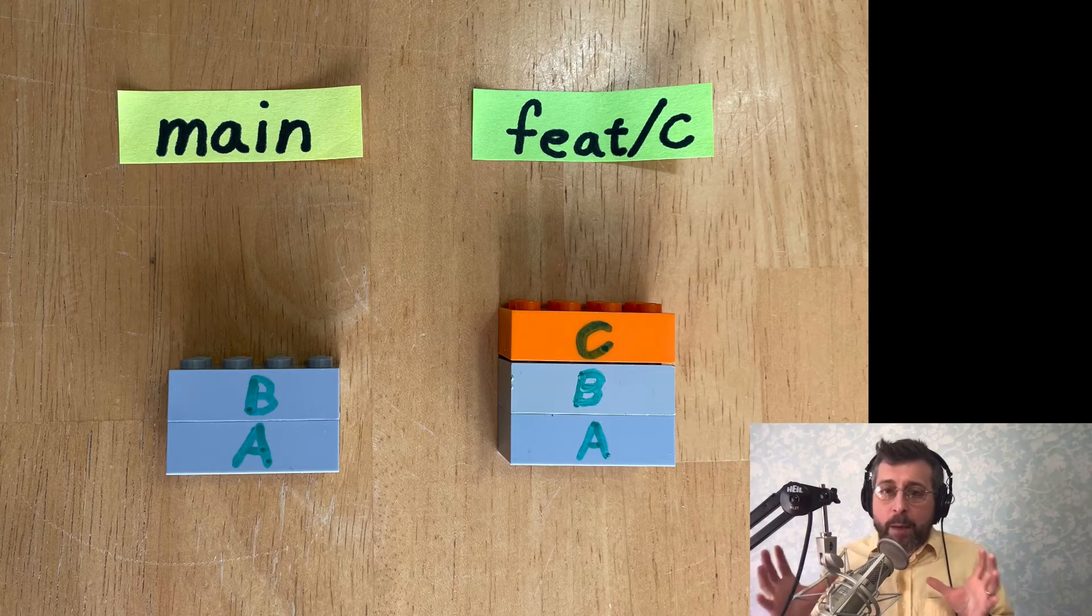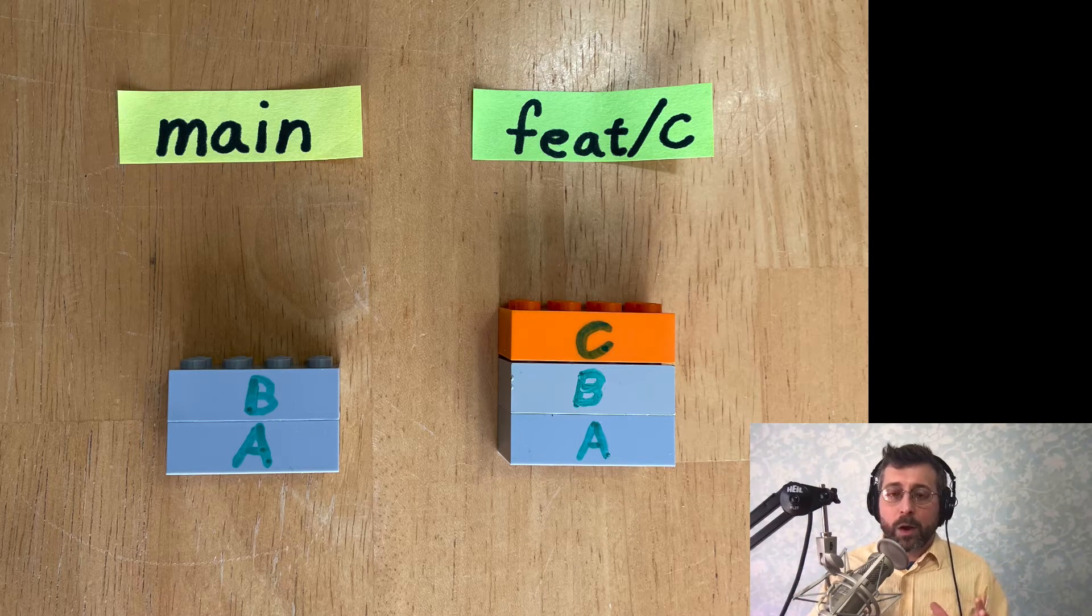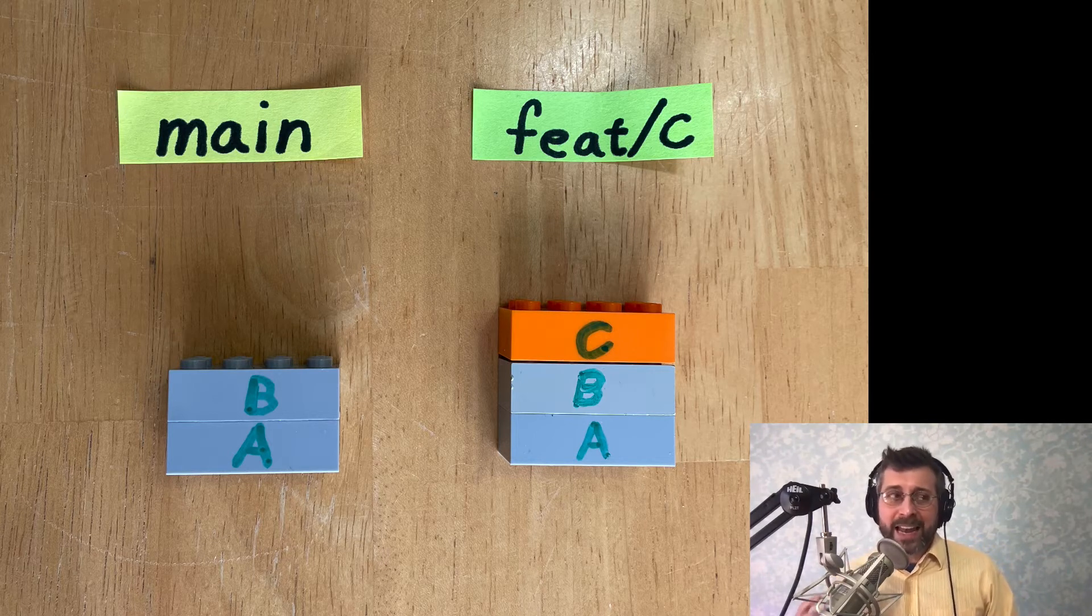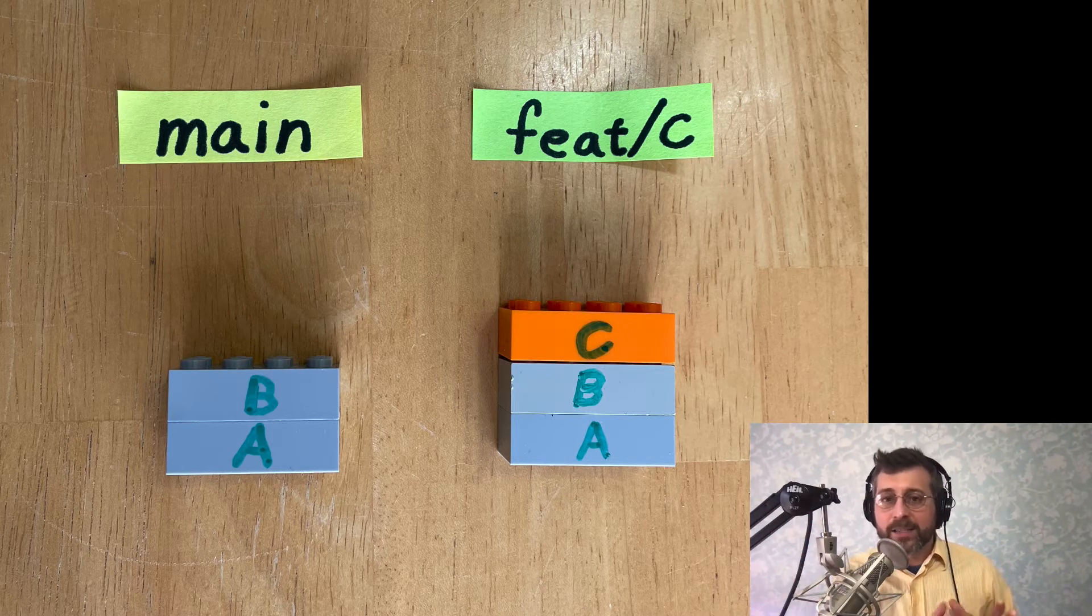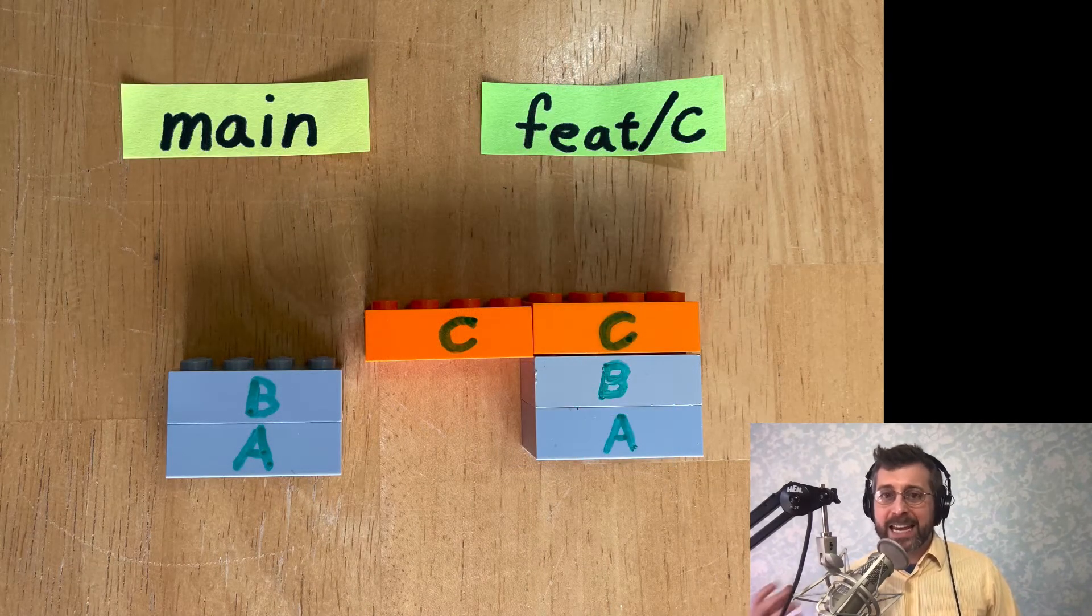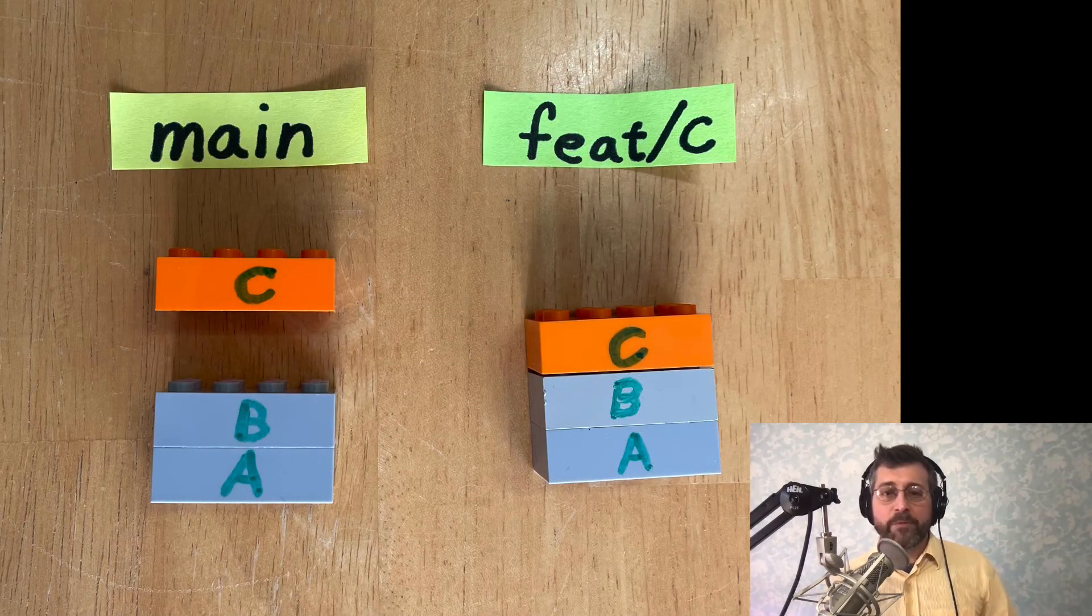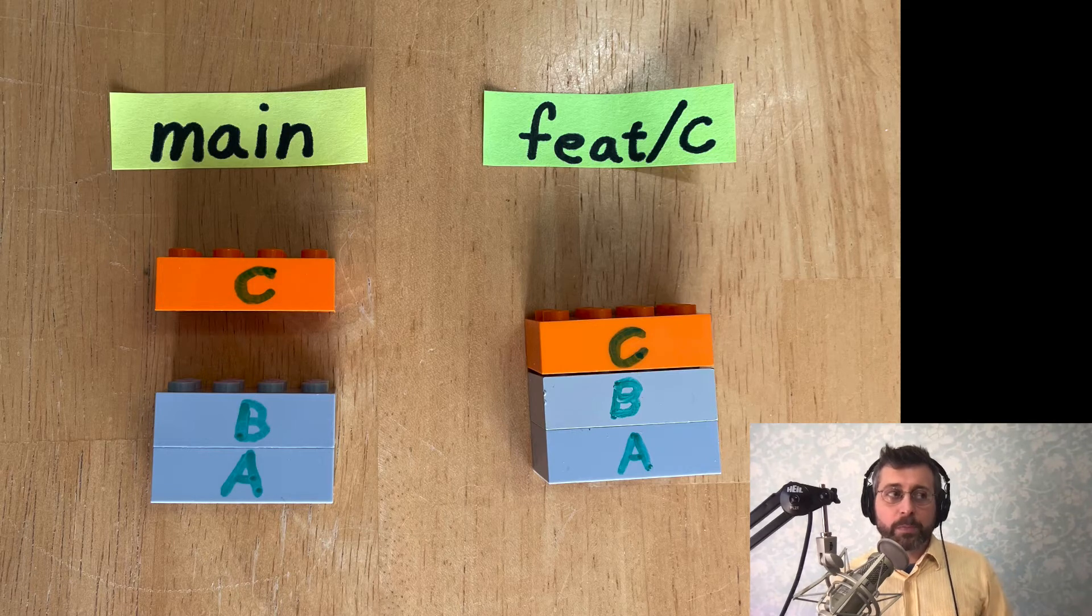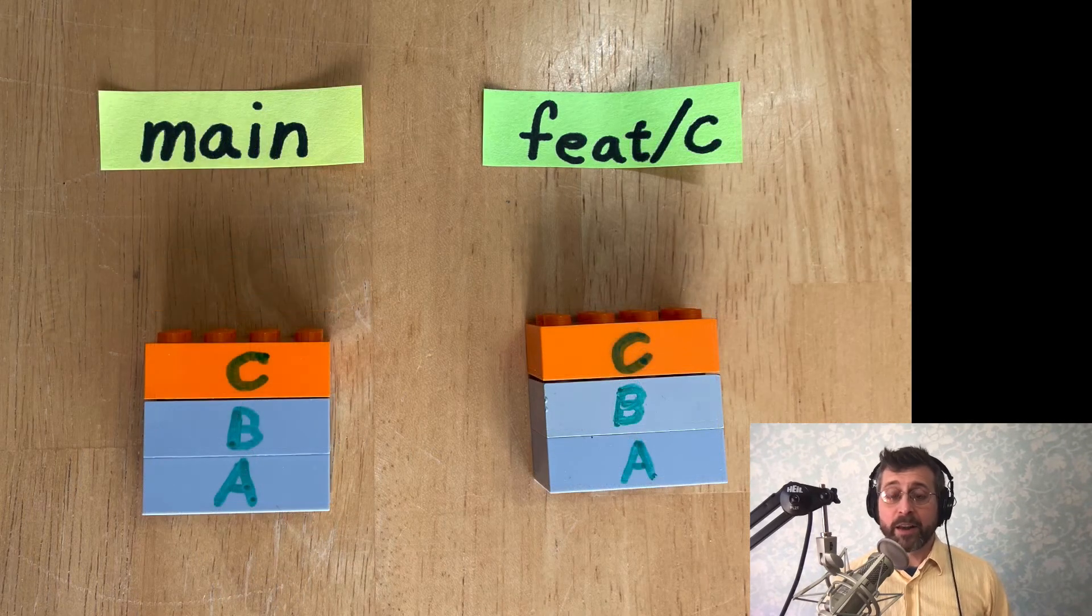So now when I say I'm going to merge feature C into main, well, what that means is I'm going to take that extra commit, anything that's on C that doesn't already exist in main, and I'm going to copy that over. So I end up taking that commit, making a duplicate of it, and then I take it over and I drop it on top of main. So when I get done with this merge, my main branch and my feature C branch look the same. They're identical.